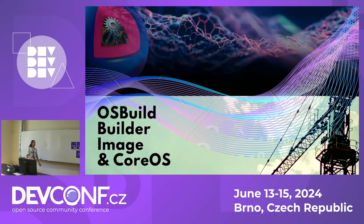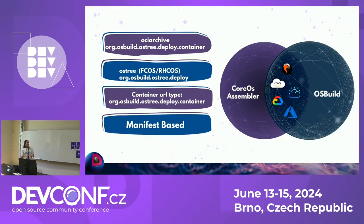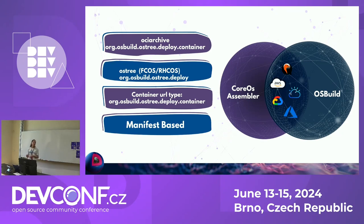Where does OS Build fit in? Both products do almost the same thing — there's a huge intersection between what the CoreOS Assembler does and what the OS Build team does. What we identified as useful was the disk image generation part, because it was duplicate work — we were doing the same thing OS Build does. So we decided to hand that part to the OS Build team and adjust it to our needs.